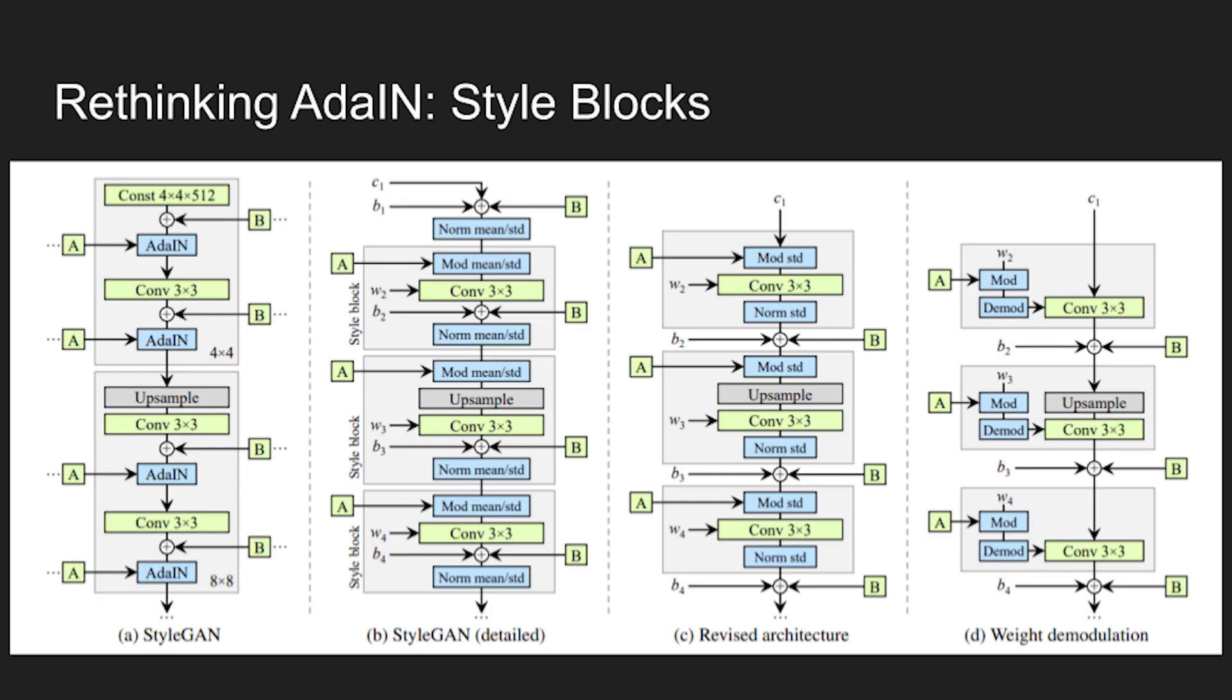Jumping right in, the first improvement StyleGAN2 made was in revisiting adaptive instance normalization. They replaced this with something called convolution modulation and demodulation which I will get to in a moment. Adaptive instance normalization or AdaIN if you don't have much time is a method of applying a style to the feature map of an image.